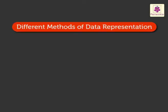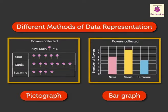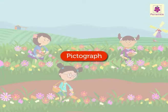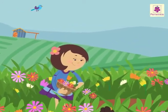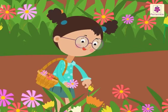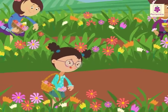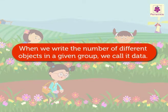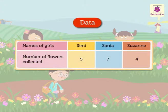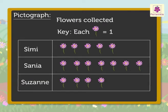There are different methods of data representation; two of them are pictograph and bar graph. Today we will learn how to read a pictograph and a bar graph through some examples. Look at the flower farm: Simi collected five flowers, Sanya collected seven flowers, and Suzanne collected four flowers. When we write the number of different objects in a given group we call it data. This data can be represented by drawing pictures — it is called a pictograph.